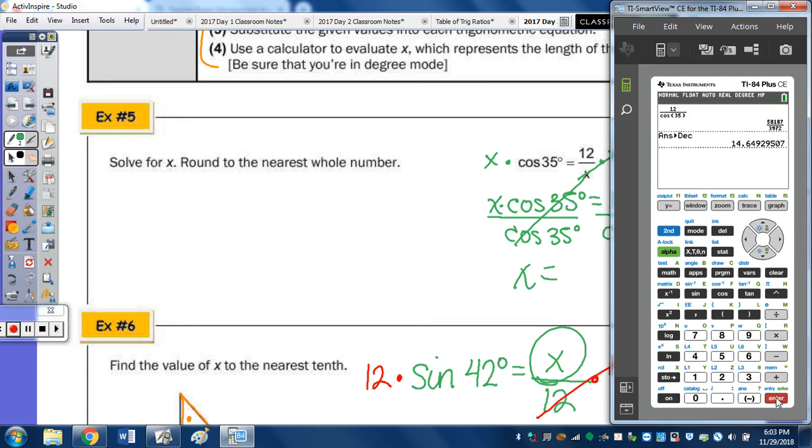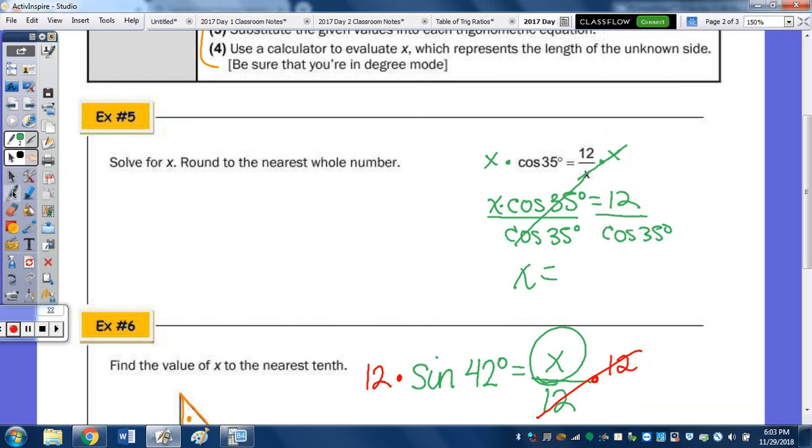Now when you do these, you can do it in two separate steps or just use the alpha y equals to get your fraction. And we're going to do 12 in the numerator divided by the cosine of 35 in the denominator. But we want it to the nearest whole number, so go to math, go down to decimal, and it's 14.64929507. So let's write that down, and then we'll round. So 14, 6, 4, 9, 2, 9, 5, 0, 7, to the nearest whole number. So for x, x is approximately 15.